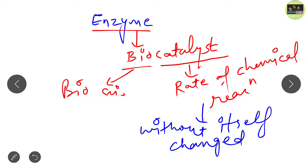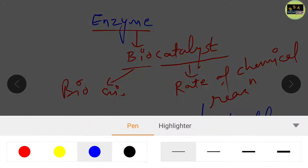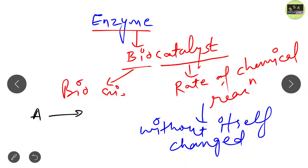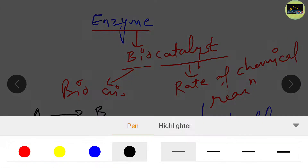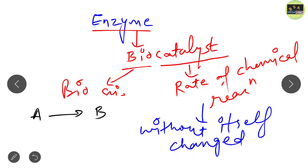Now we are going to discuss some important properties of enzyme. Before I discuss the properties, let me give you an example. Suppose a reaction takes place: A is converted into B. Suppose the time taken is about 10 minutes, and in this case enzyme is not present.